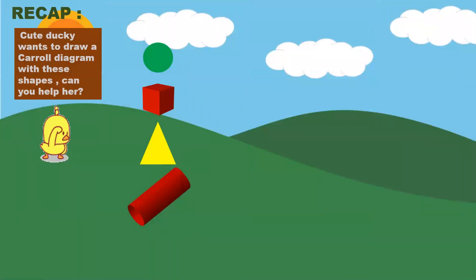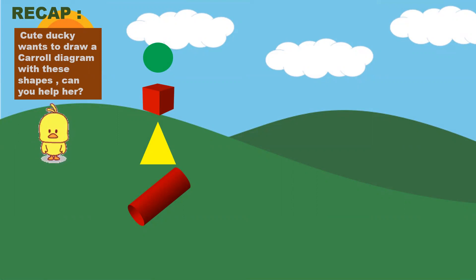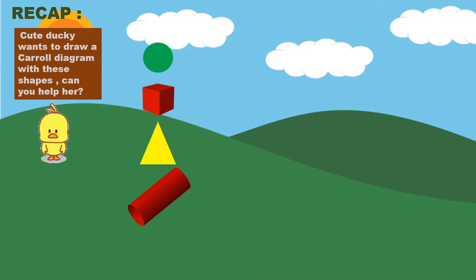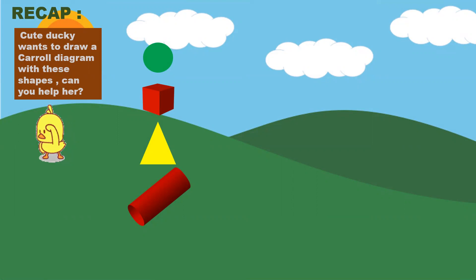Let's do a recap. Cute Ducky wants to draw a cattle diagram with these shapes. Can you help her? What are the shapes over here? A circle, a cube, a triangle and a cylinder.